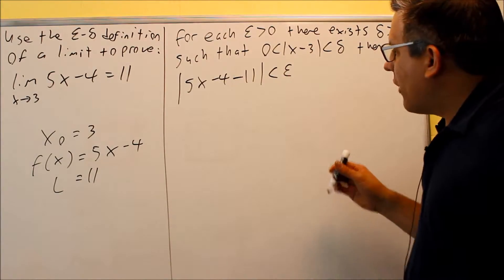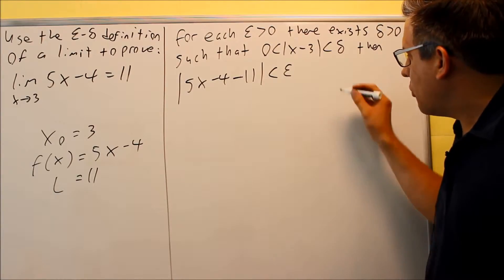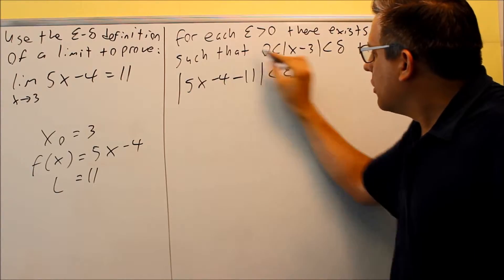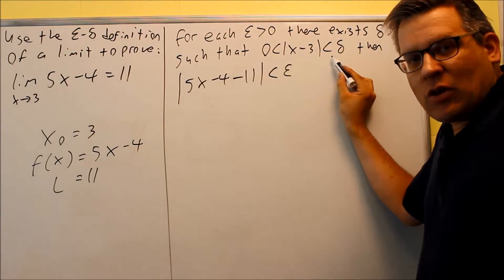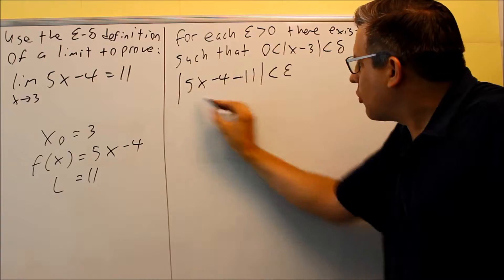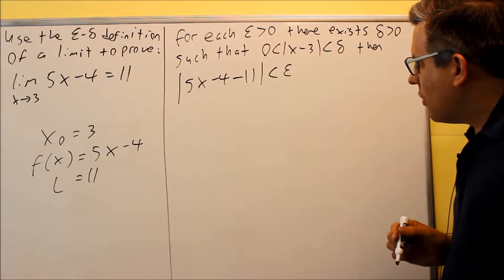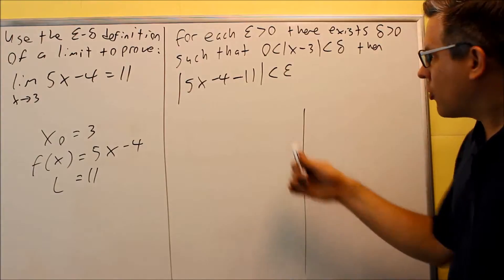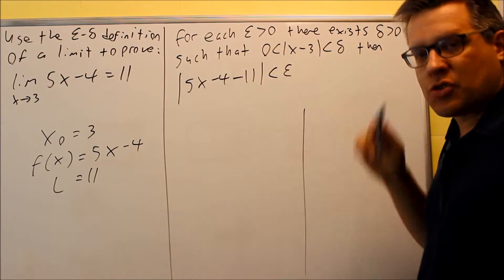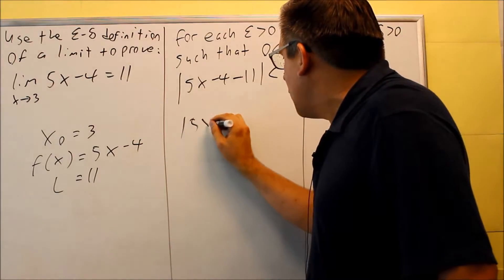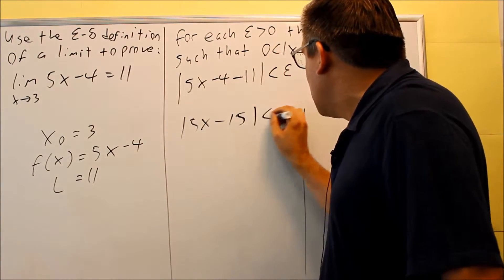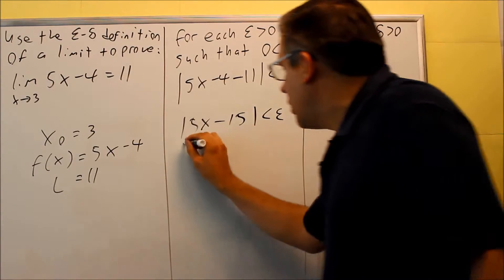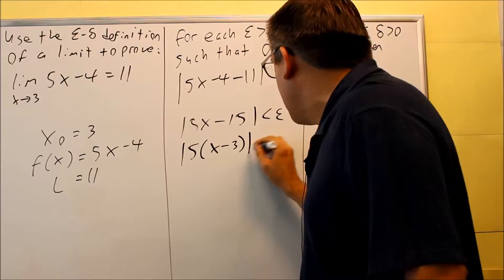Once we have this complete, we have to work out both sides of the proof. First, we're going to show that the right-hand side expression equals the left-hand side. Starting with the absolute value of 5x minus 4 minus 11, I can simplify that to 5x minus 15 is less than epsilon. I can then factor out a 5, giving the absolute value of 5 times (x minus 3) less than epsilon.